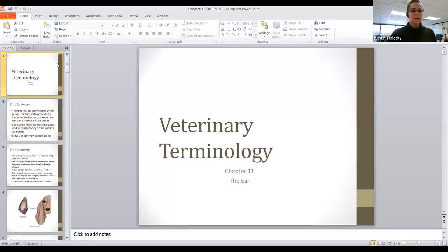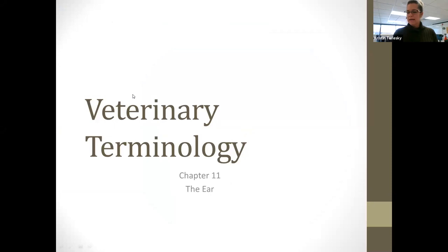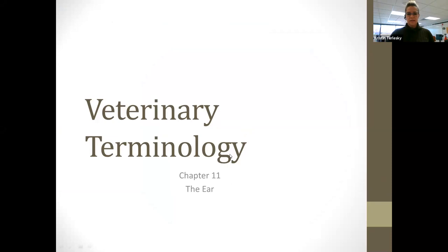So next chapter here, we're going to go on the ear. We have chapter 11 in the terminology book, the ear. I'm going to share my screen here. So as we know, in dogs, cats, horses — lots of different shaped ears that we see. They have them sticking up, really long, really short. But the inside structure is going to be the same, pretty much the same as we do, as far as hearing and the pathway it goes through.